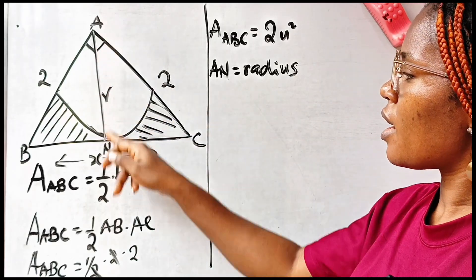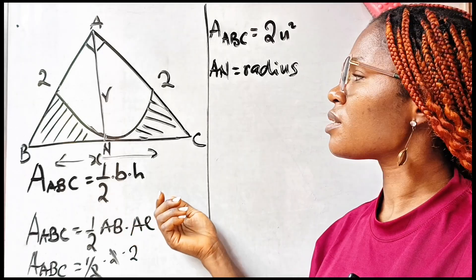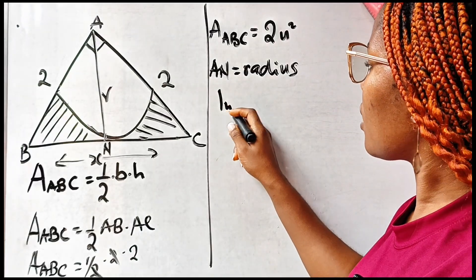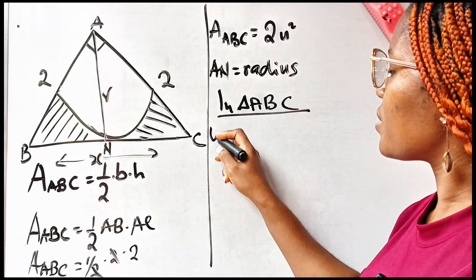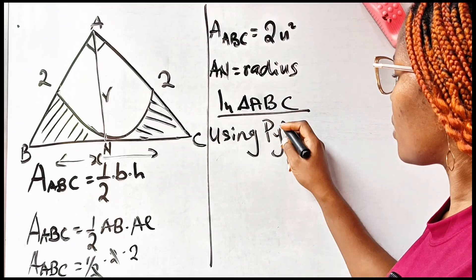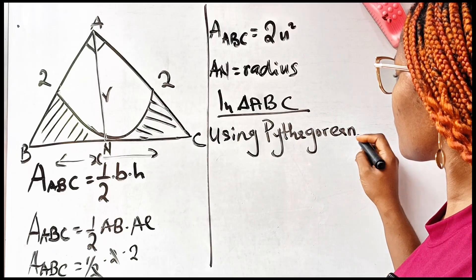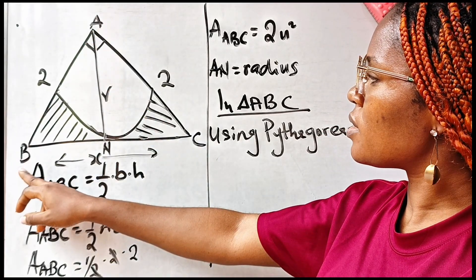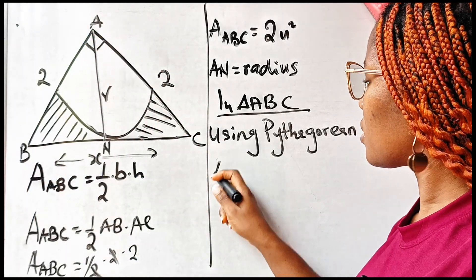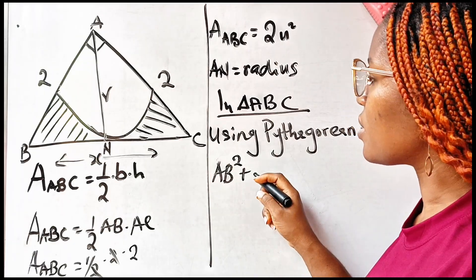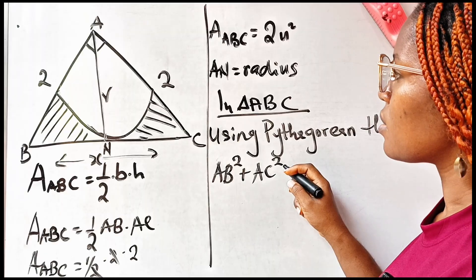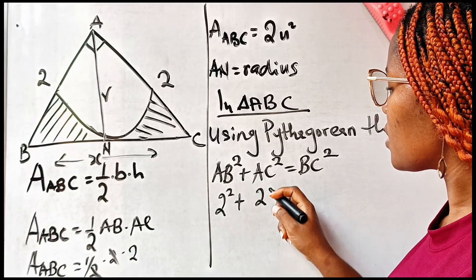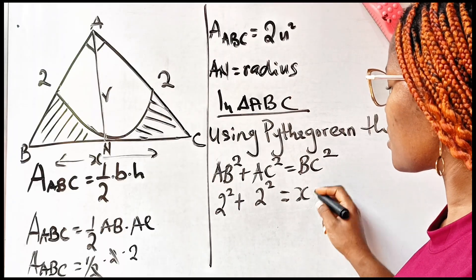Before that, since triangle ABC is a right angle triangle, considering triangle ABC and using the Pythagorean theorem, we will have that AB squared plus AC squared is equal to BC squared. So we have AB squared plus AC squared equal to BC squared. Both are 2, so two squared plus two squared is equal to BC squared, that is X squared.